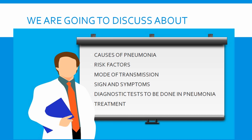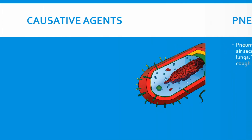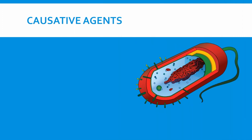Also, if you want to know about pneumonia in more detail — the pathophysiology of pneumonia, how infiltration occurs within our lungs — please find the link in the description box below. Pneumonia is an inflammatory condition of the lungs affecting primarily the small air sacs also known as alveoli. It is an infection that inflames the air sacs in one or both lungs. The air sacs may fill with pus or fluid, thereby causing cough with phlegm or pus, fever, chills, and difficulty in breathing.